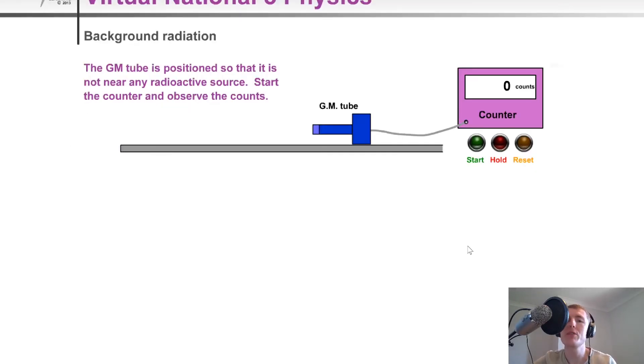And just before we stop, I want to show you how you would actually measure background radiation. Well, it's quite simple to do. All you would do is take a Geiger Muller tube, connect it to a counter, and just start detecting radiation. So you would make sure there is no radioactive source present.